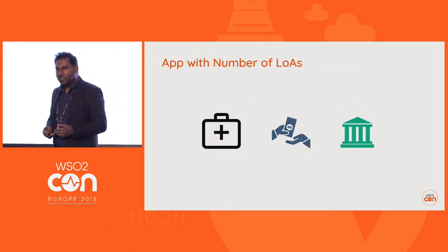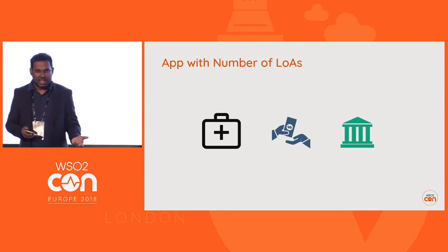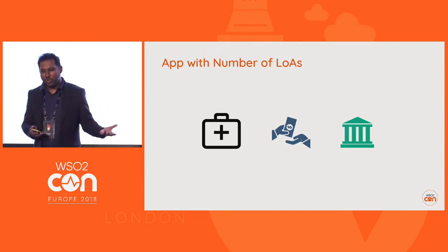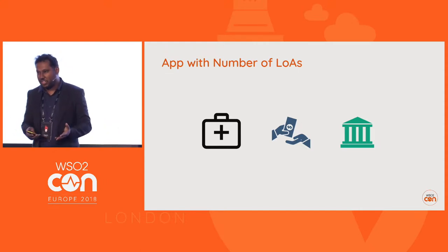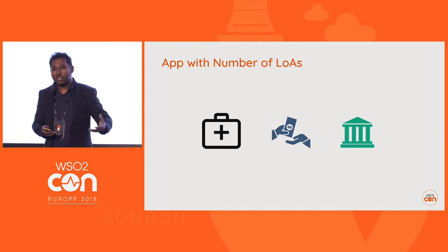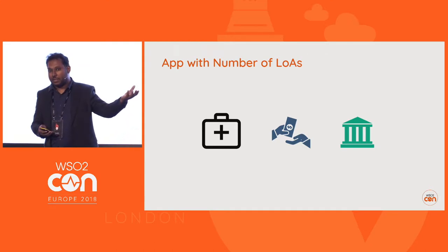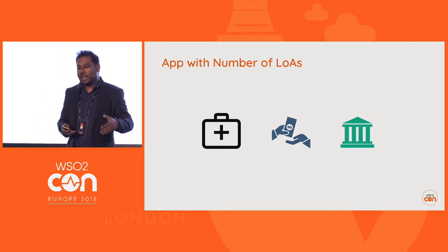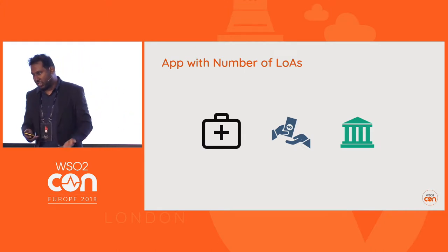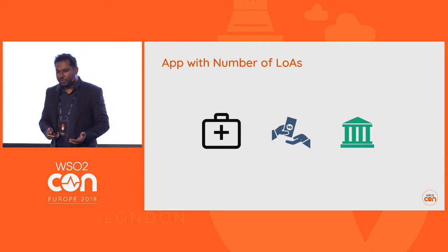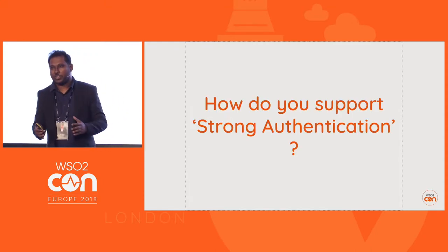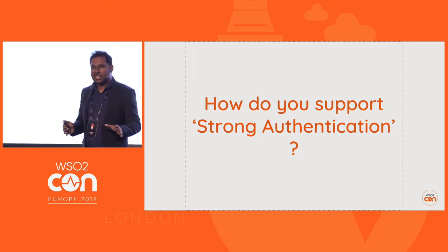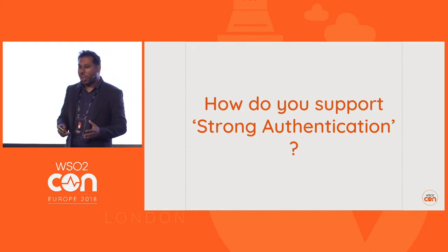Then there is level of assurance. For example, in a healthcare application, if you just want to log in, maybe simple authentication is enough. But when you want to download your medical reports, the application may require additional security. So now you have some understanding about why we need strong authentication — the requirements are there, so how do we support that?